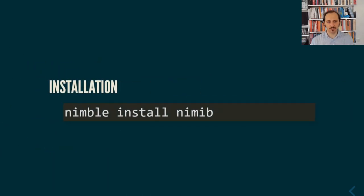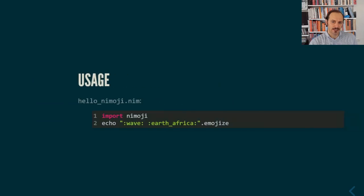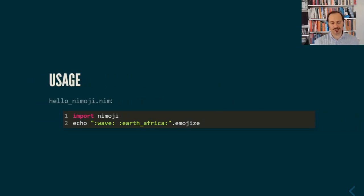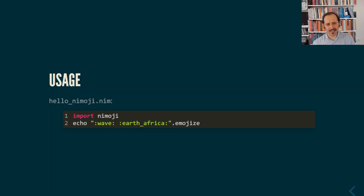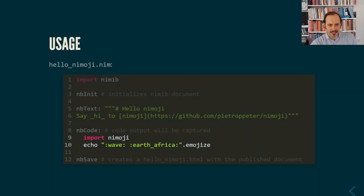Nimib is a package — it's a normal package. You install it with 'nimble install nimib.' It doesn't even install a binary. It's just a package that you import. Let's say that you're working on something, a piece of code — these are two lines of simple code using a library called Nemoji, which was my first package contribution to Nimib. And let's say that you want to publish a document that shows how to use Nemoji with this very simple line. So what you will do is, taking these two lines, add an import Nimib at the beginning.